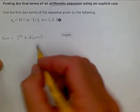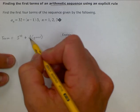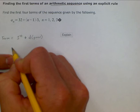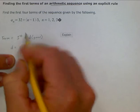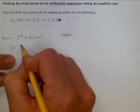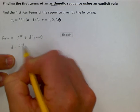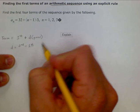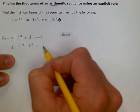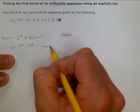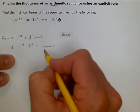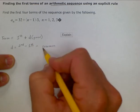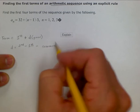So, in order to find d, remember with arithmetic sequences, our d, or common difference, is equal to the second term minus the first term. That's our common difference, or how the sequence is changing—the common rate of change, or what we would consider the slope of the line.